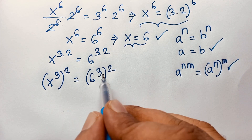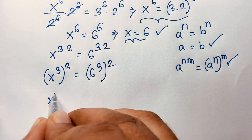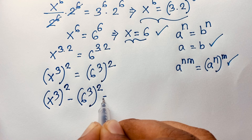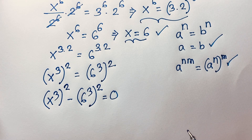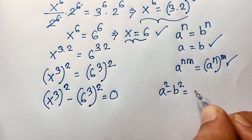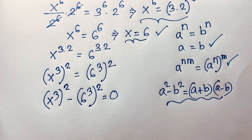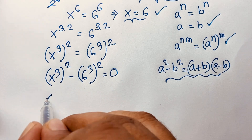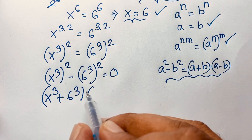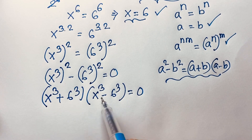Moving everything to one side gives (x^3)^2 - (6^3)^2 = 0. Recognizing this as a difference of squares, a^2 - b^2 = (a+b)(a-b), where a = x^3 and b = 6^3, we factor to get (x^3 + 6^3)(x^3 - 6^3) = 0.